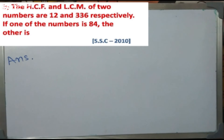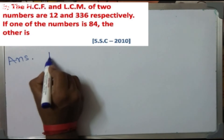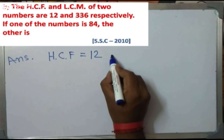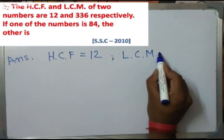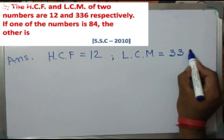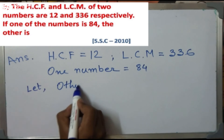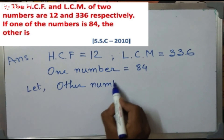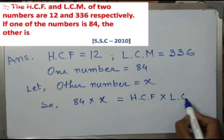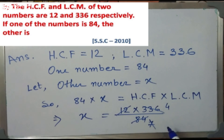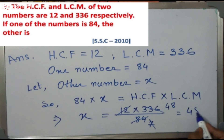Next: the HCF and LCM of two numbers are 12 and 336 respectively. If one of the numbers is 84, find the other. This question comes in SSC 2010. Using the formula — product of two numbers equals HCF × LCM — we get: 84 × X = 12 × 336. So X = (12 × 336) ÷ 84. After simplifying, X = 48. So the other number is 48.